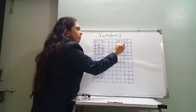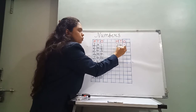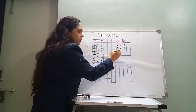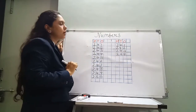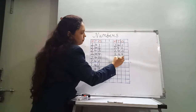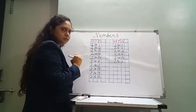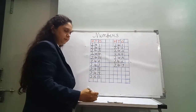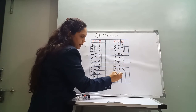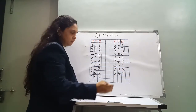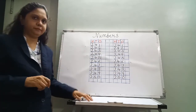Same यहाँ पे 241 — 2 times लिखोगे, अगर जल्दी जल्दी आ जाएगा ना आपको. 242. 243. 244. Very good, बोल रहे हो ना? 245. 246. 247. Speak loudly. 248. 249. 259.